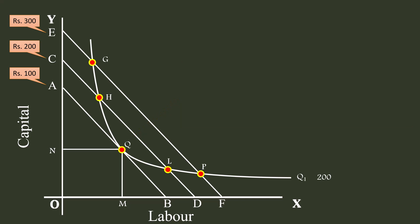All the conditions of the least cost combination are satisfied at point Q. Combination Q is technically and economically more efficient than any other combination. Q is the least cost combination or optimum combination. He will use M units of labor and N units of capital to produce 200 units of output. Though G, H, L, and P are on the isocost and isoquant, the producer will not prefer them, as they are on a higher isocost line signifying a higher cost of production.